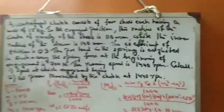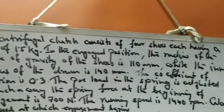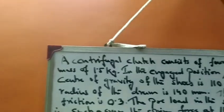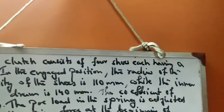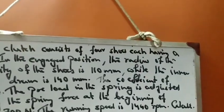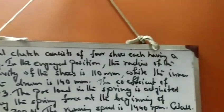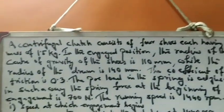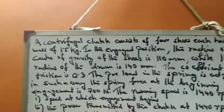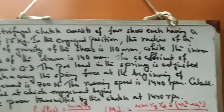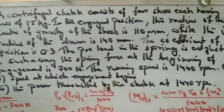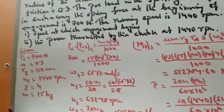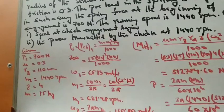Now moving to the second problem on centrifugal clutch. A centrifugal clutch consists of four shoes, each having a mass of 1.5 kg. In the engaged position, the radius of the center of gravity of the shoes is 110 mm, while the inner radius of the drum is 140 mm. The coefficient of friction is 0.3. The spring preload is adjusted so that the spring force at the beginning of engagement is 700 Newton. The running speed is 1440 rpm. Calculate: (1) speed at which engagement begins, and (2) power transmitted at 1440 rpm.